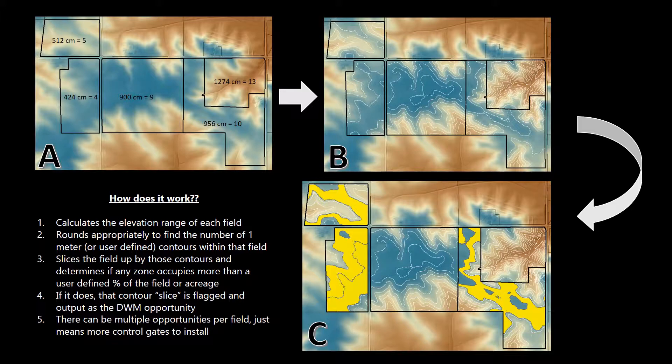As you can see, there can be multiple opportunities per field. This just simply means that more control gates would need to be installed.